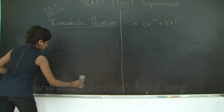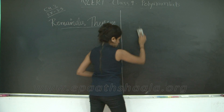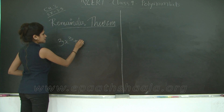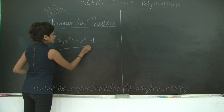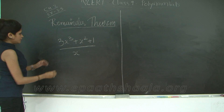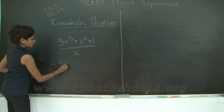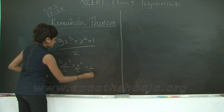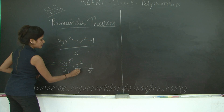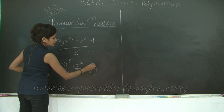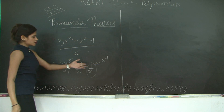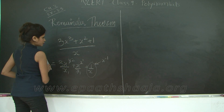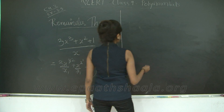For example, if I have 3x³ + x² + 1 and I want to divide it by x, splitting gives 3x³/x + x²/x + 1/x. The last term produces x raised to minus 1, which makes the entire result not a polynomial. So there is a different strategy — the long division method — that we follow to solve this.